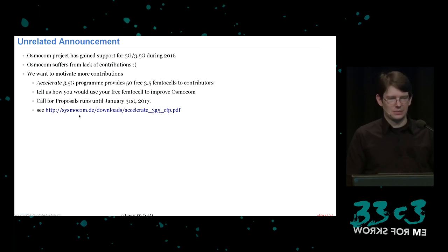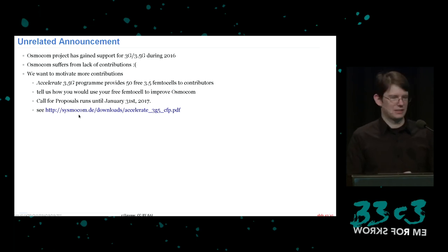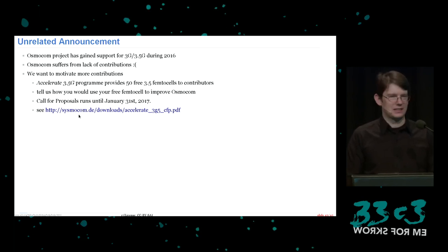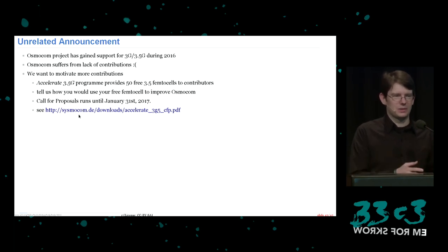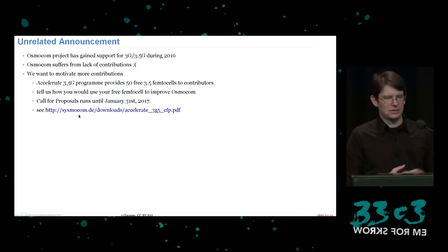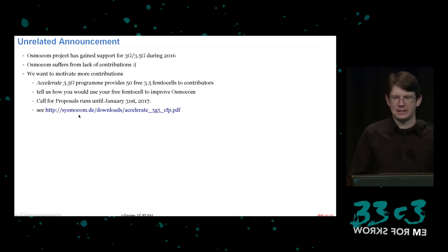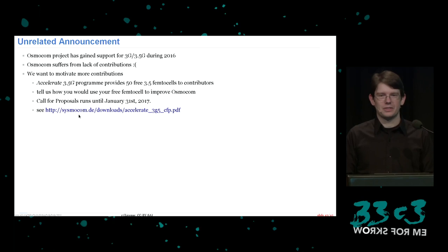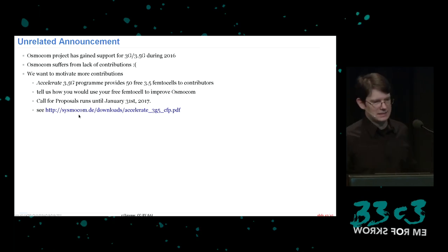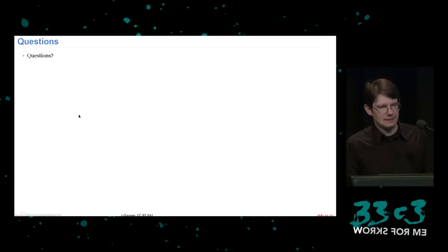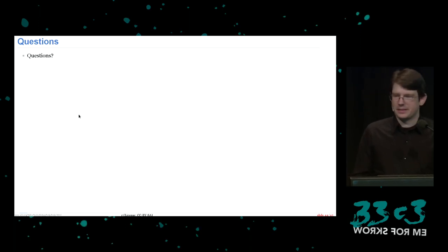Before Q&A, an unrelated announcement: the Osmocom project has gained support for running your own 3G/3.5G network during the last year. We want to motivate more contributions and have started an 'Accelerate 3.5G' program providing 50 free 3.5G femtocells to people who can convince us they would contribute something reasonable to our project. Using the femtocell and the Osmocom code you can run your own 3.5G network. Submit a proposal by the end of January to hopefully receive your free femtocell by end of February.